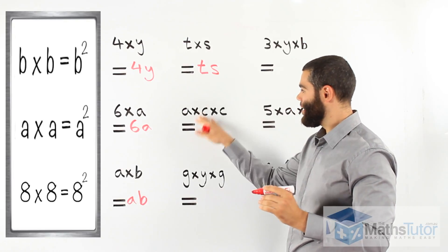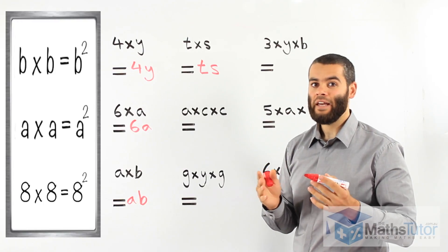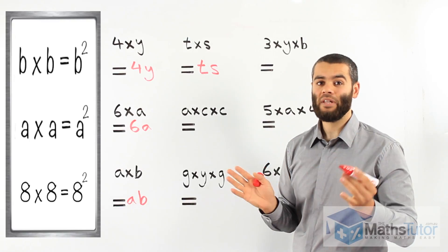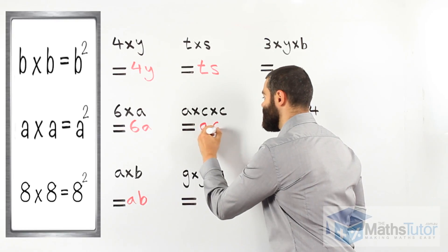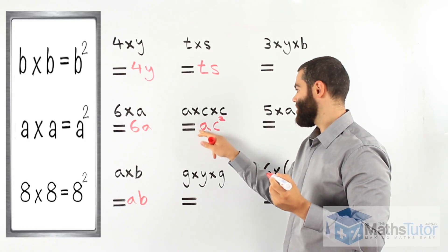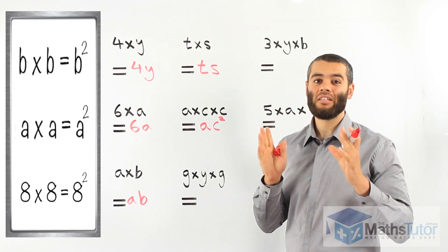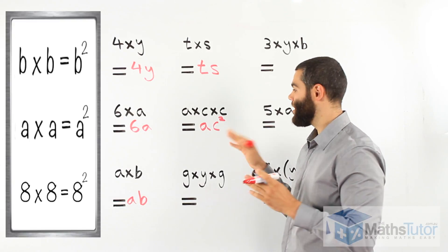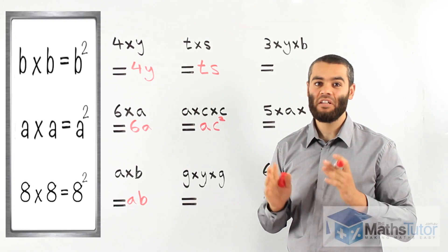Looking here, we have A times C times C. When writing this one, we get rid of the multiplication signs. A times C times C is AC squared. Why? A times C is AC, and C times C is C squared. Instead of writing ACC, in maths we like to make things simple, so we write it as AC squared — meaning A times C times C, because C squared means C times C.